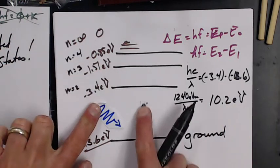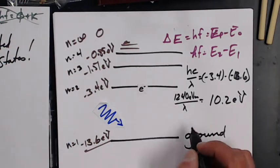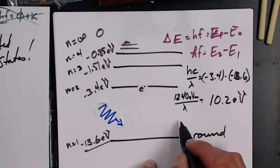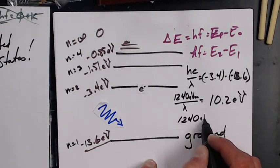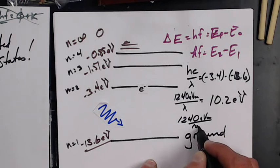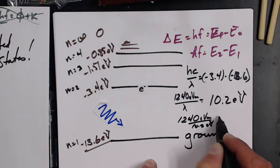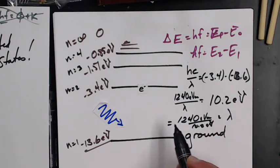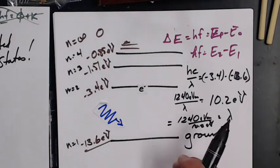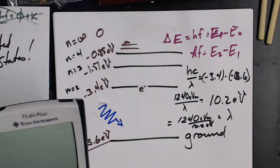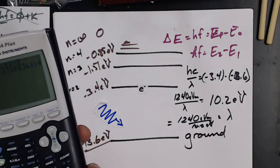So now 1240 electron volt nanometers divided by 10.2 electron volts is going to give my wavelength. I'm going to have to do the math with a calculator.